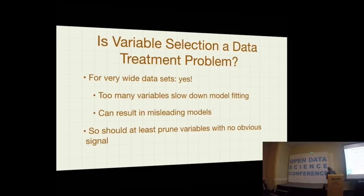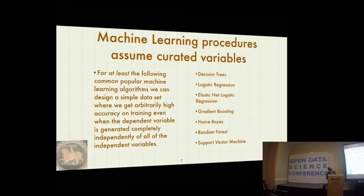Is variable selection part of data treatment? We have very good machine learning algorithms now — why can't we leave it to them? The answer is that most best-of-breed machine learning algorithms don't handle wide data well. You may think 230 columns isn't wide, but each categorical variable hides more variables within it. I can build a dataset where Y is generated completely independently of X — no possible signal — and get arbitrarily good fit on training data. Decision trees, logistic regression, elastic net, gradient boosting, naive Bayes, random forest, and SVM — some claiming to use cross-validation or regularization — all fail to detect that there's no model. They work hard to build a model even when there's no effect, then fail on test.